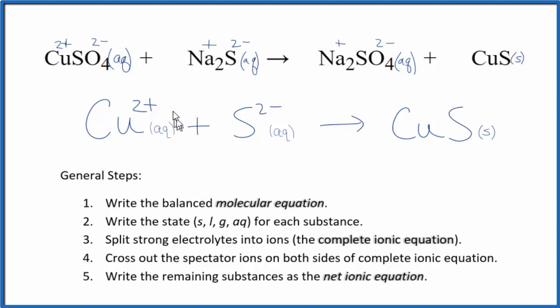You see, charge is conserved. We have a 2+ and a 2-, they balance out. We get this neutral compound. And mass is conserved as well. We have a copper atom, copper atom, sulfur atom, sulfur atom.